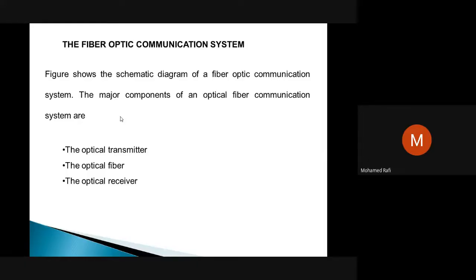What we are going to discuss is what are the things we require to communicate the data from one source to another, from transmitting station to receiver station. First we need a transmitter. The transmitter should have audio data or video data that can be converted into a light signal. The media or guided media we can use is an optical fiber. The receiving station can again convert the light signal into an audio signal. This block diagram shows how we can communicate data by using optical cable.